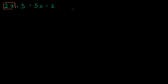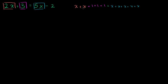So we have 2x on the left-hand side — that's literally x plus x — and then you have plus 3, which is the same thing as plus 1, plus 1, plus 1. That is equal to 5x's on the right-hand side. And we have 5x minus 2, where the minus 2 we can write as minus 1 and minus 1.